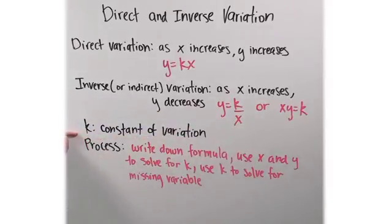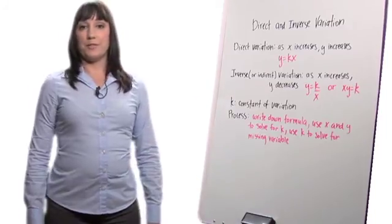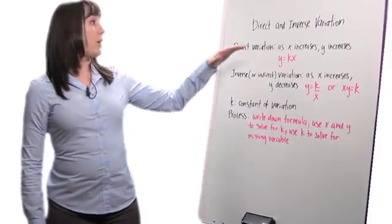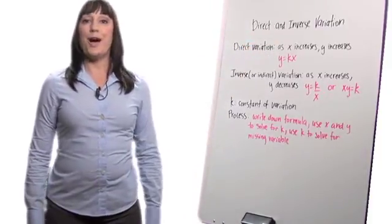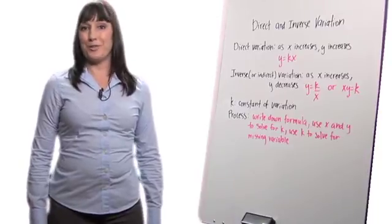And k is what is referred to as your constant of variation. Here's how you do these types of problems. You know that they are a direct or an inverse variation problem because those words will be in the problem.